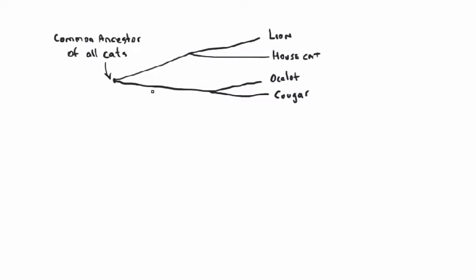Before there were different kinds of cats — lions, house cats, ocelots, cougars, cheetahs — there was only one species with all the important cat-like features we associate with members of the cat family. This was the common ancestor of all cats, and that ancestral species gave rise to two species that each became its own lineage and eventually underwent further speciation. The cat family is really large, including both modern and extinct species, all products of speciation events along the tree.